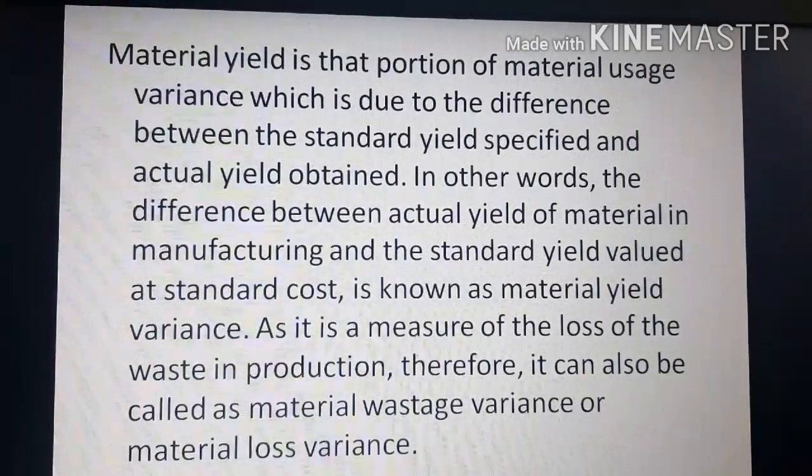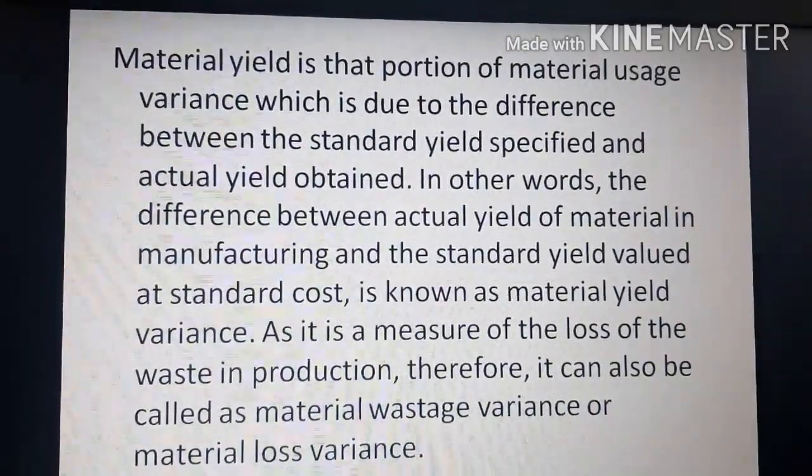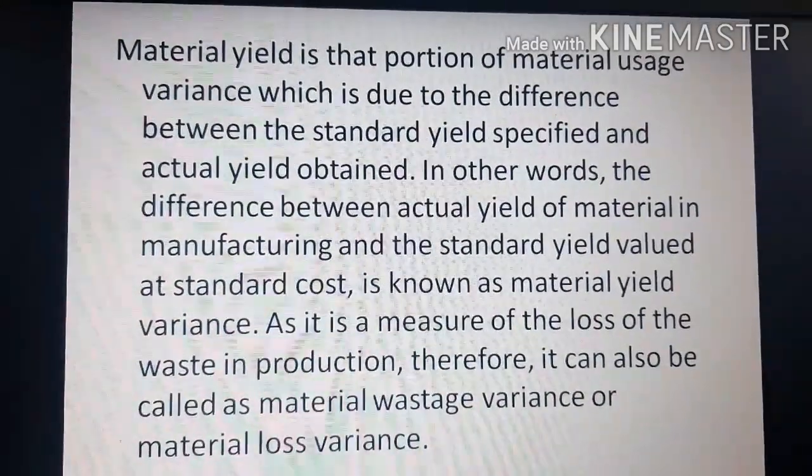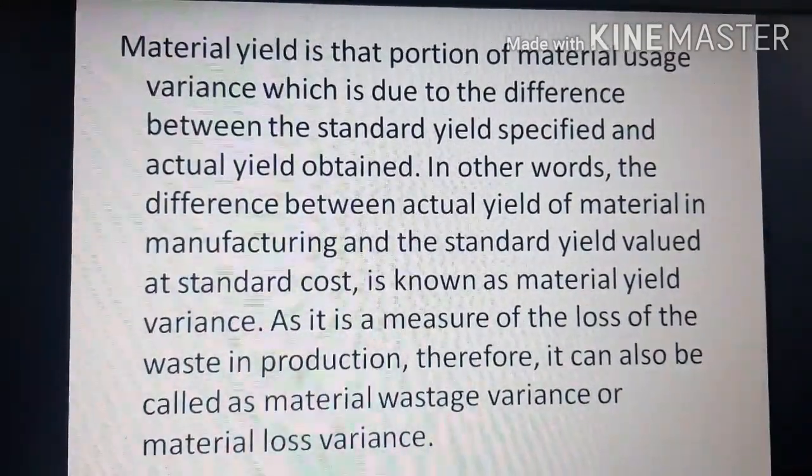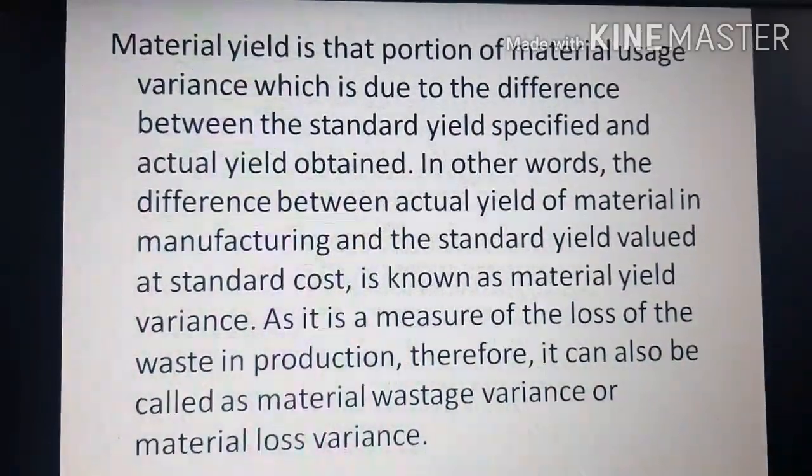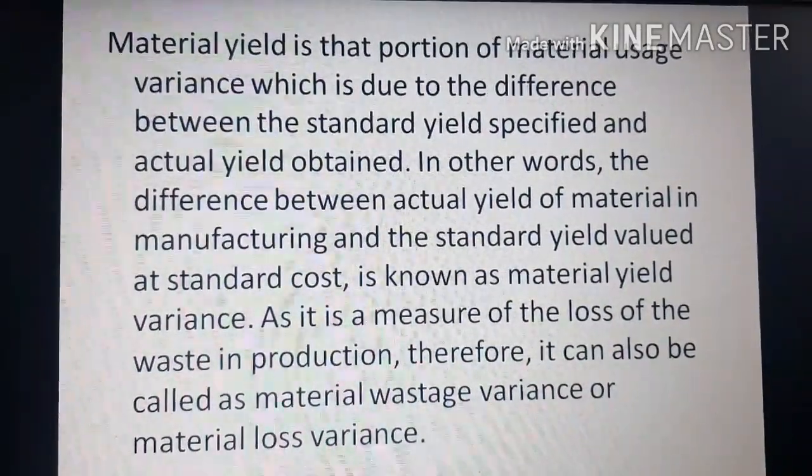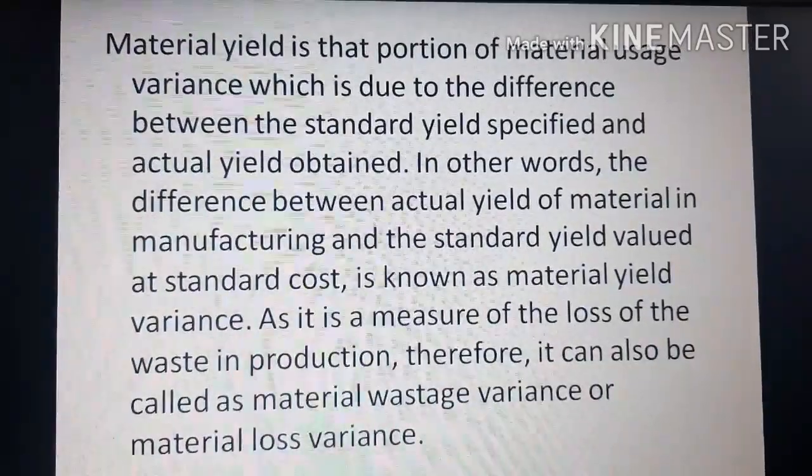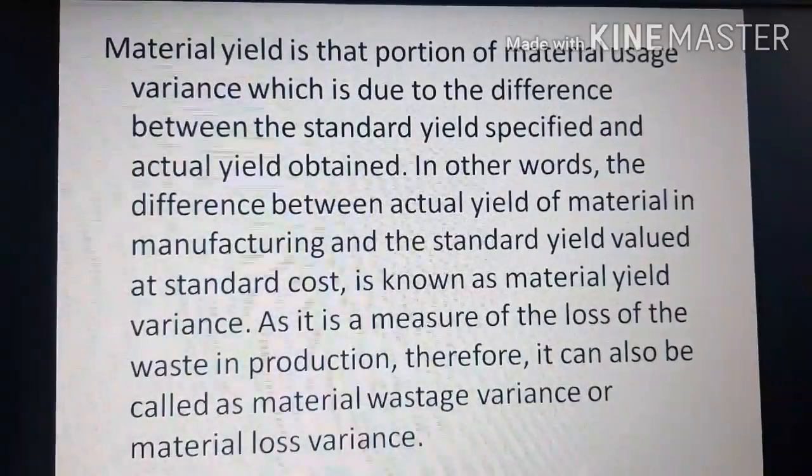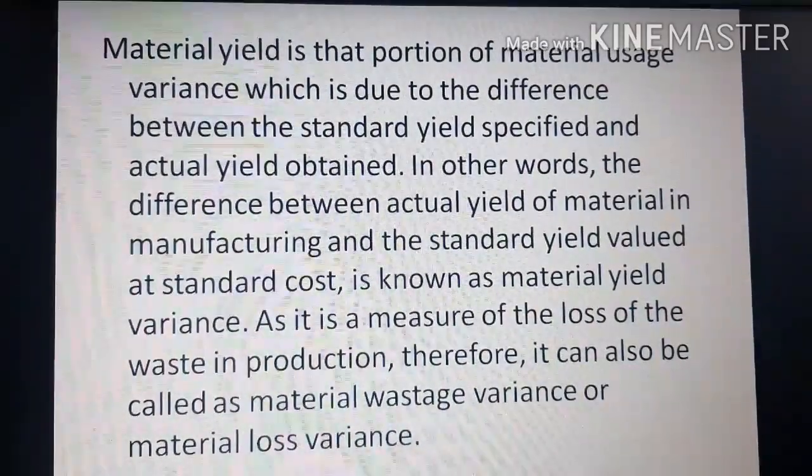Material yield is that portion of material usage variance which is due to the difference between the standard yield specified and actual yield obtained. In other words, the difference between actual yield of material in manufacturing and the standard yield valued at standard cost is known as material yield variance.